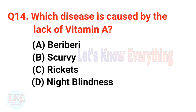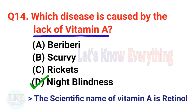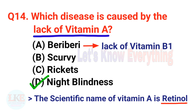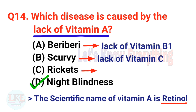Question number fourteen: which disease is caused by the lack of vitamin A? A) Beriberi, B) Scurvy, C) Rickets, D) Night blindness. The right answer is option D, night blindness. The scientific name of vitamin A is retinol. Beriberi is caused by lack of vitamin B1, scurvy by lack of vitamin C, and rickets by lack of vitamin D.